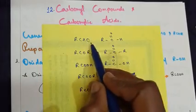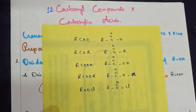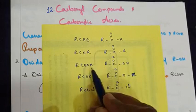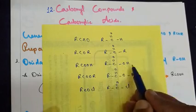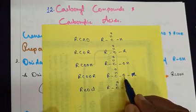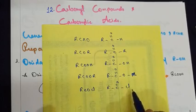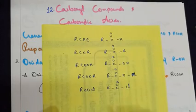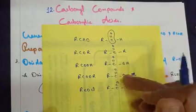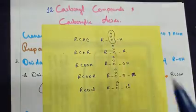Why is it so? Aldehyde can be written as R-C(=O)-H. Ketone is R-C(=O)-R. Acid is R-C(=O)-OH. Ester is R-C(=O)-OR, and acetyl chloride is R-C(=O)-Cl. So every way you can see the presence of carbon with a double bond to oxygen. This presence is called carbonyl compounds.